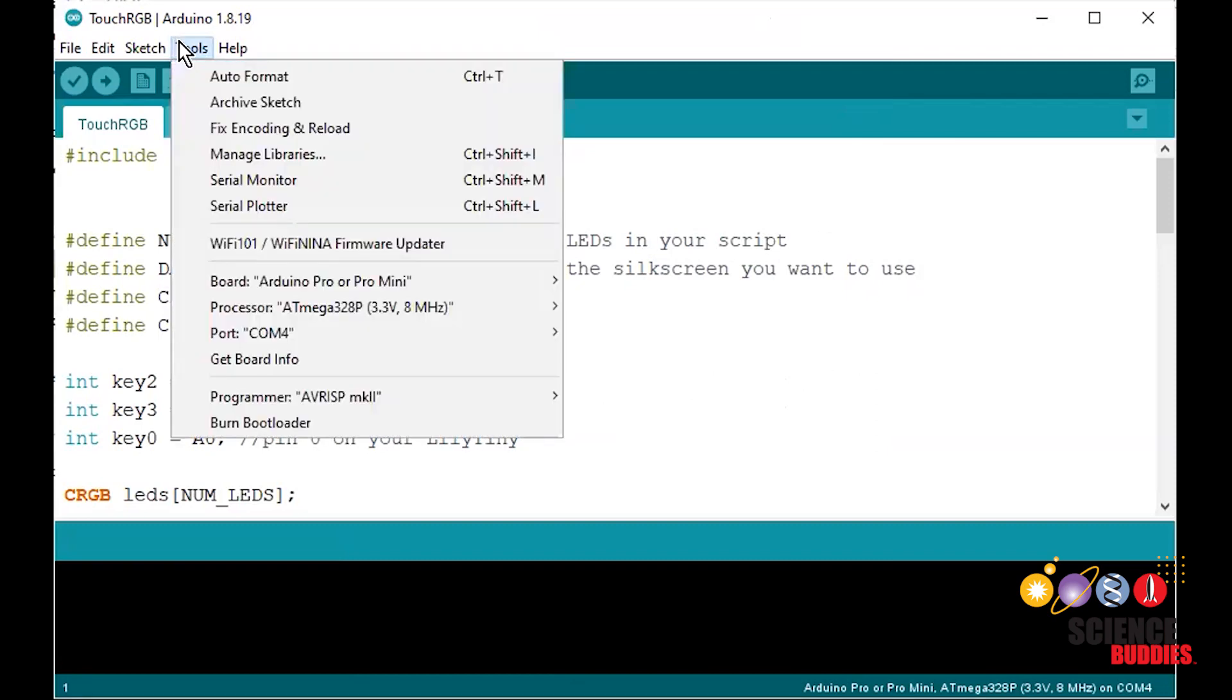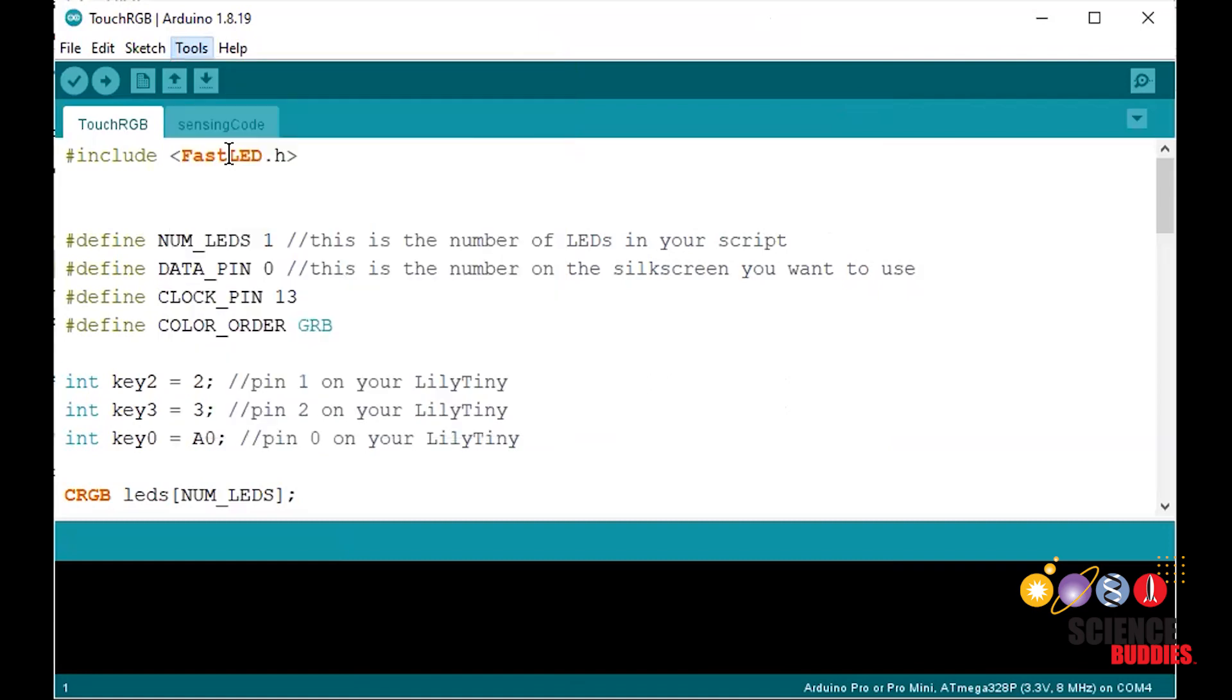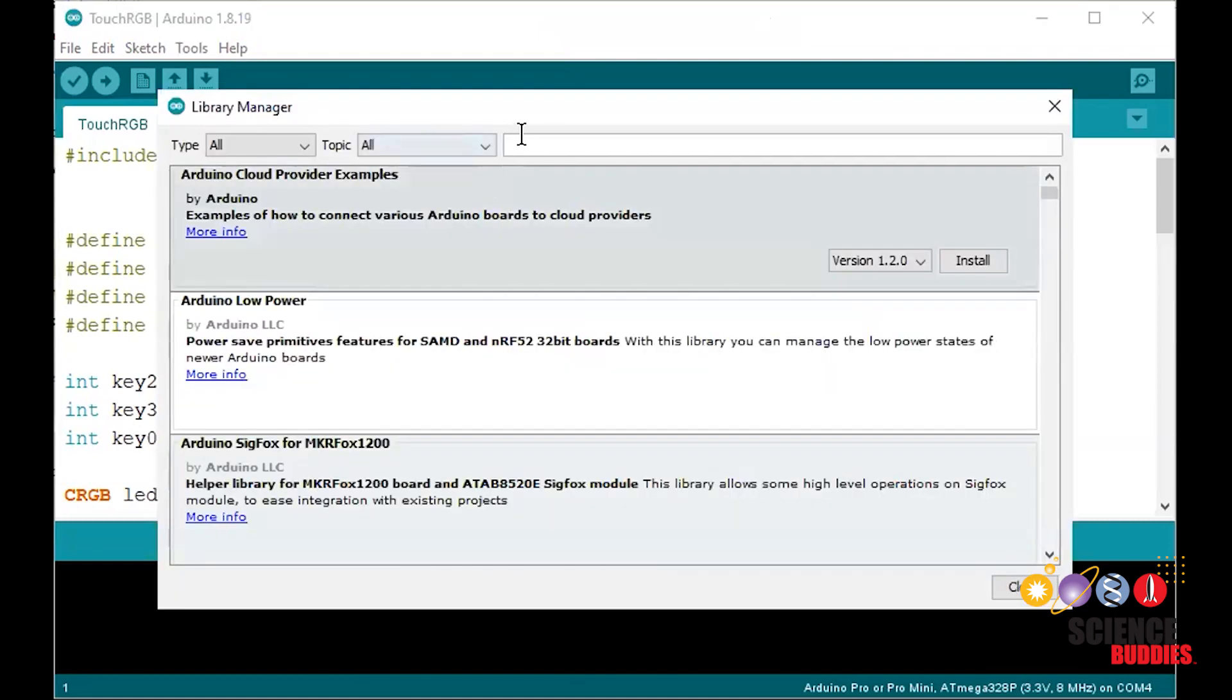You should also download and install the FastLED library. To do so, navigate to the top bar and click Tools, Manage Libraries. From here, search for FastLED. Install.